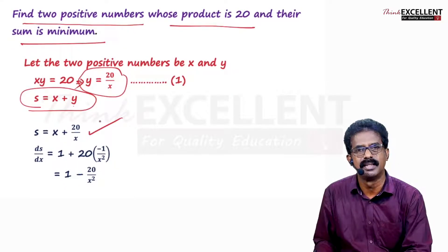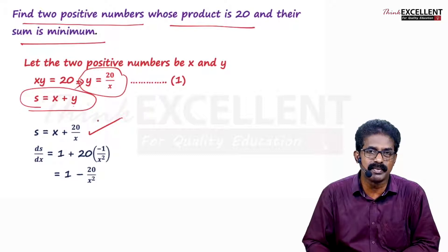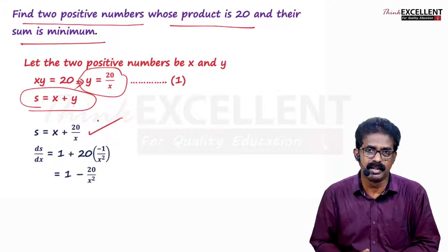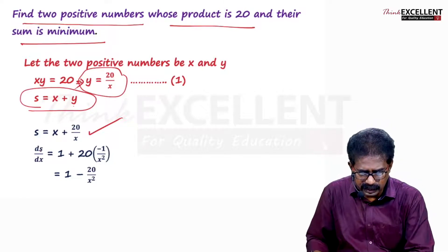Now you got the equation. Differentiate two times. Only thing you need: 1 by x derivative. What is 1 by x derivative? Minus 1 by x square. 1 by x square derivative: minus 2 by x cube. That's all.